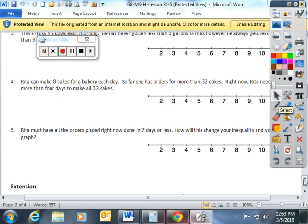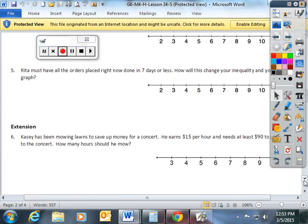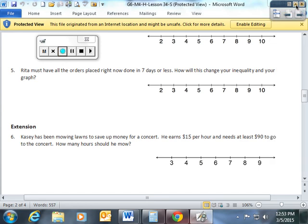Let's go down and do one more. Number six. This is an extension of the activity. Casey has been mowing lawns to save up money for a concert. He earns $15 per hour and needs at least $90 to go to the concert. How many hours should he mow?